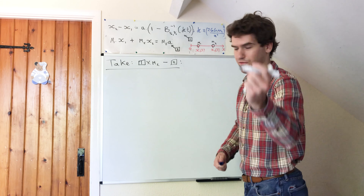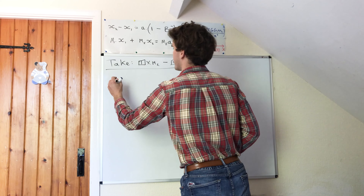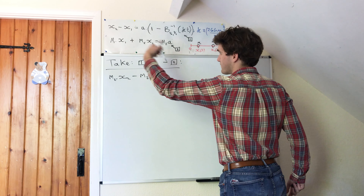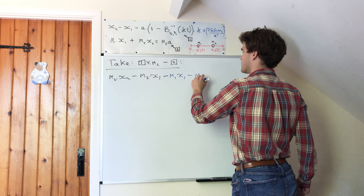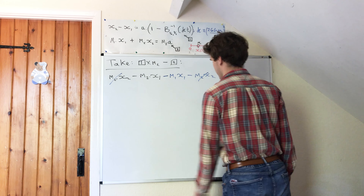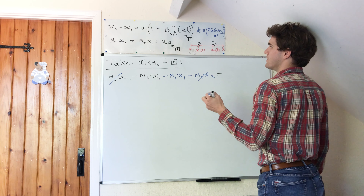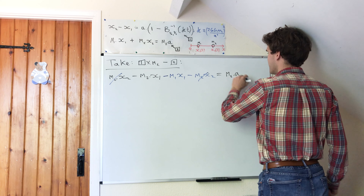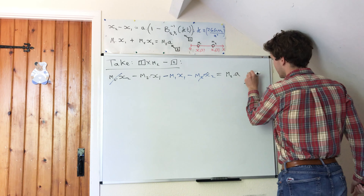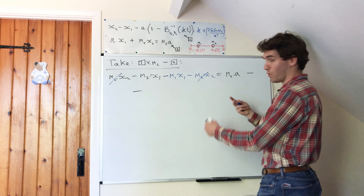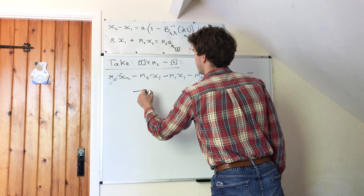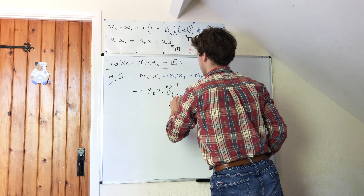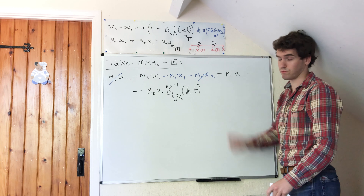I'm going to do this in the black pen red pen style. So equation one gives us m2 times x2 minus m2 times x1 on the left-hand side. Subtracting the left-hand side of equation two gives minus m1·x1 minus m2·x2. The m2·x2 terms already cancel, which is exactly what we wanted. This equals the right-hand side of equation one multiplied by m2, which is m2 times a. I'm also going to distribute the a out: m2·a minus m2·a times the inverse incomplete beta function, half three over two, of kappa times t. We also need to subtract the right-hand side of equation two, which is m2·a — and these cancel out nicely.